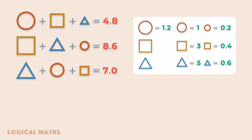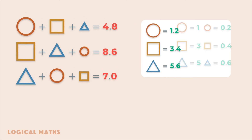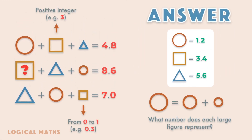Hence, the large square represents the number 3.4 and the large triangle represents the number 5.6. And that's the correct answer to the problem. Thank you for watching the video!